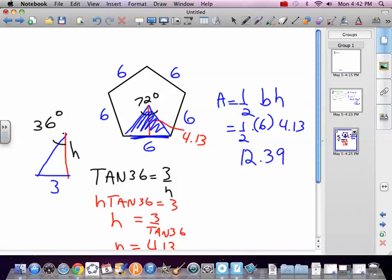There are 5 of those, so I'll multiply that by 5. 61.95 centimeters squared. That is the hex. You've got to use some trig to solve your hex. Because it's regular, we're going to be able to bisect things. If it's not regular, you've just got to bust it up in the shapes you can find.